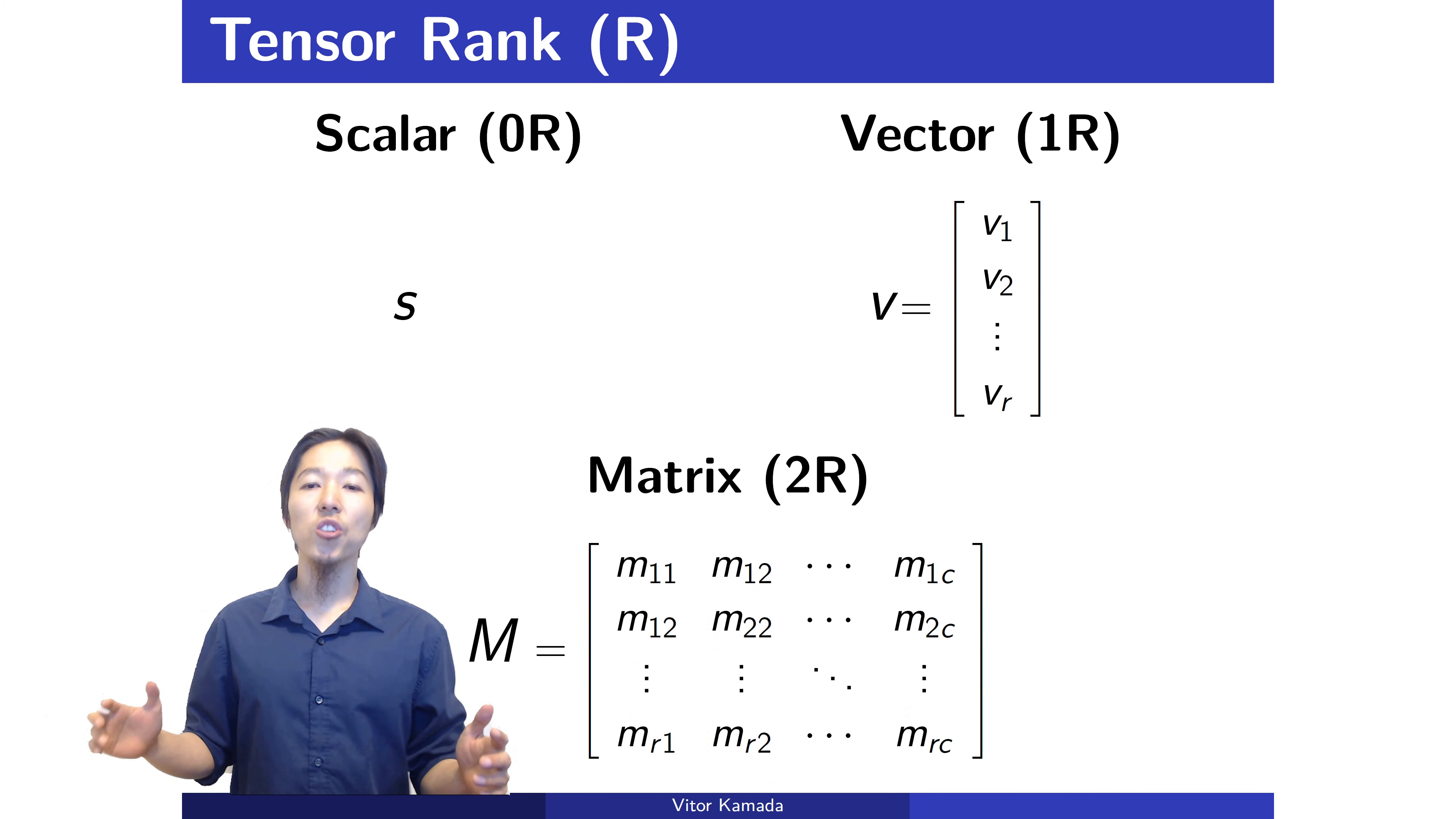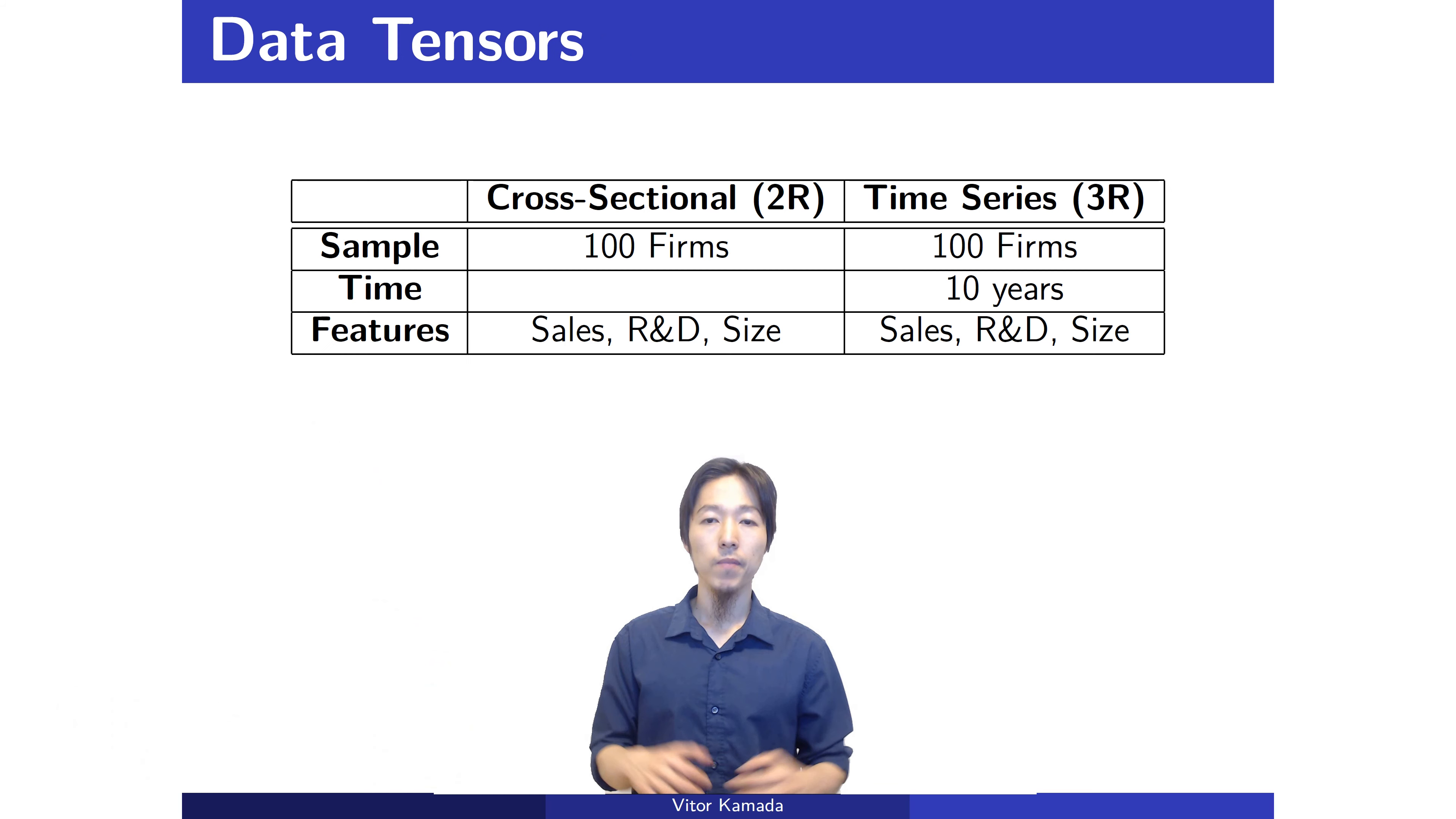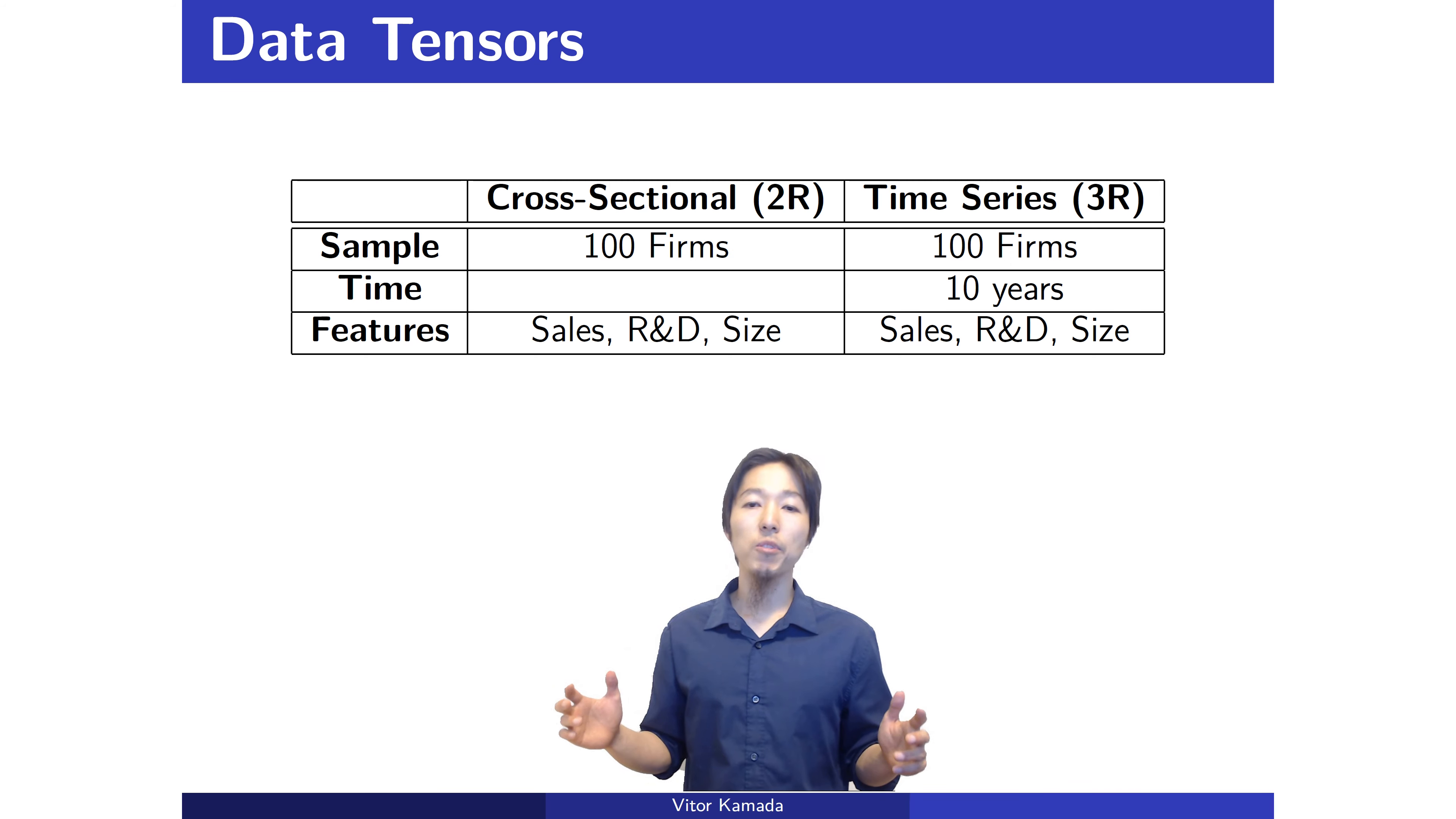A matrix is just an array of vectors. In cross-sectional data, we need two ranks: one to store the sample size, and the other to store the characteristics of the firms, like for example the size or R&D. For time series, we just need another rank to store the time.